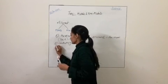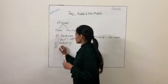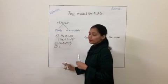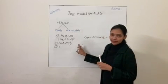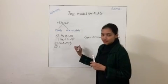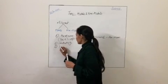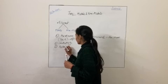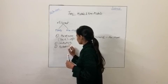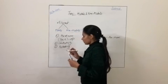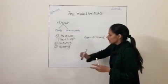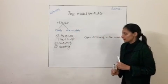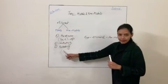I hope those two properties are clear to you. The third property is malleability. This is a property of metals.